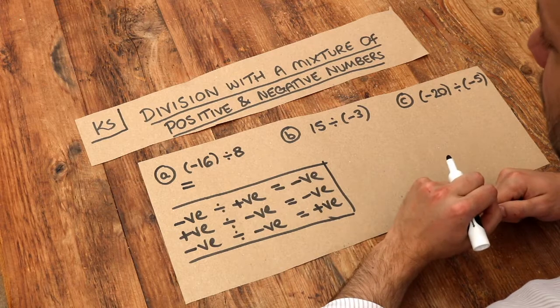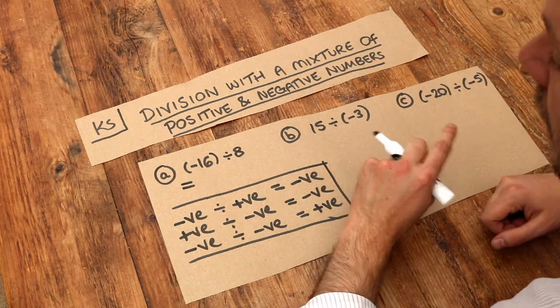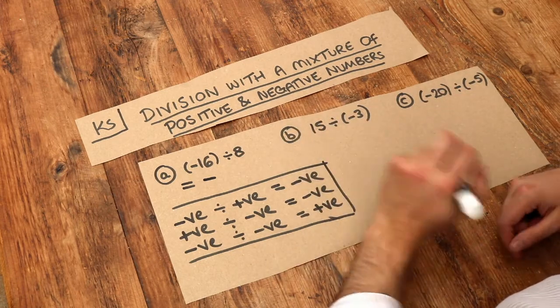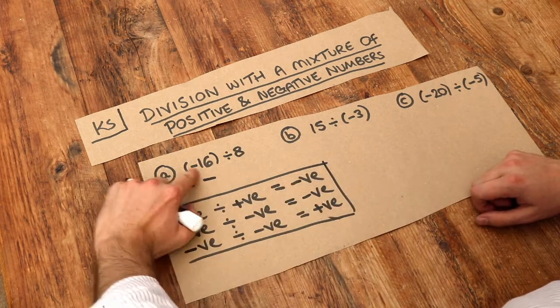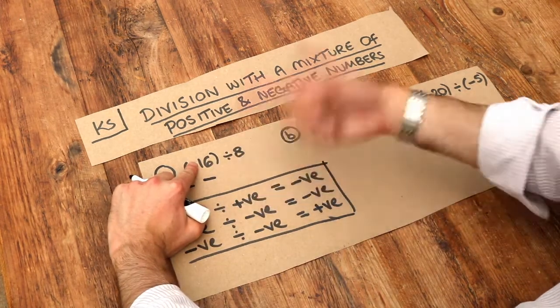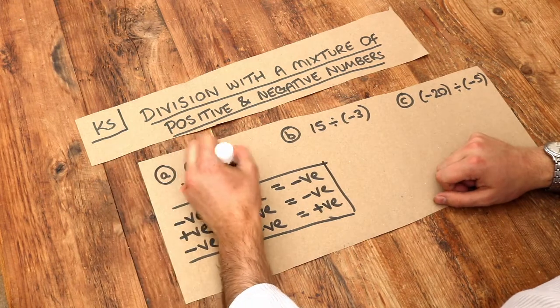We've got a mixture of positive and negative in some order, so we know the number is going to be negative. Then we can work out what the number is. So forgetting the sign, what is 16 divided by 8? It's just 2, so we end up with minus 2.